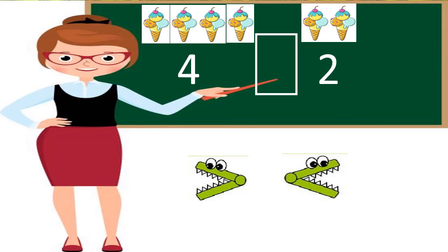Oh, see ice cream. Mmm, yummy. On one side, there are four ice creams and on the other side, there are two ice creams. Now, tell me which number is bigger, four or two? Yes, you are right. Number four is bigger than number two. So, we will put this sign.